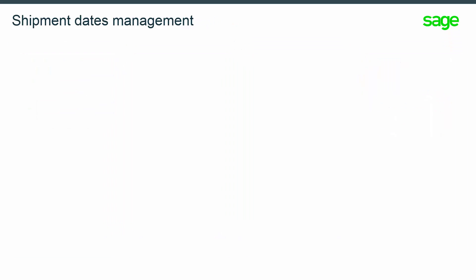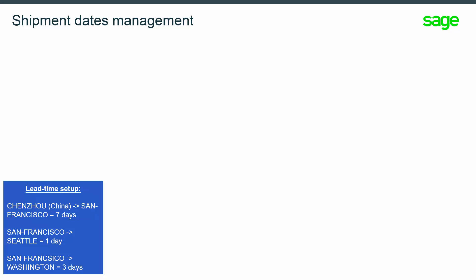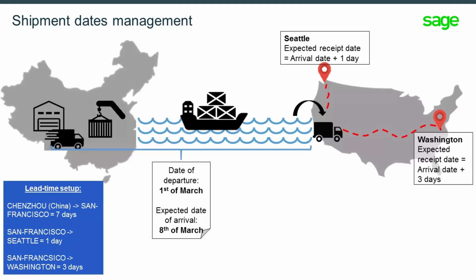Monitoring a correct expected receipt date allows you to provide reliable information to the reorder process and hence have more accurate results. Sage X3 provides a calculation of dates based on predefined lead times. In this example, the goods are transported by boat from China and delivered to San Francisco, then sent to the Seattle site and the Washington site.